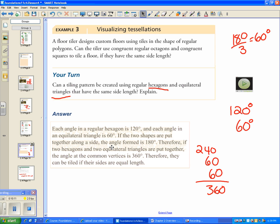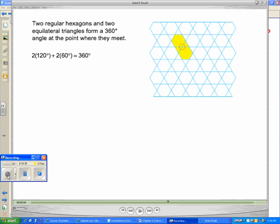Each angle in a hexagon is 120 and each angle in equilateral is 60. The two shapes are put together along a side. The angle formed is 180. Therefore, if two hexagons and two triangles are put together, the angle at common vertices is 360. Therefore, they can be tiled. And here's what that tiling pattern looks like. We do have those two triangles and two hexagons coming together.